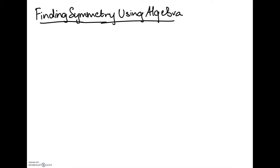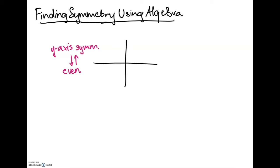If you're already familiar with those terms, we can just get started. First, I want to point out the overlap between two terms: y-axis symmetry is essentially when a graph is symmetric across the y-axis. If a graph has y-axis symmetry, that means the function is even. Let's draw a simple parabola with its vertex at the origin — this graph is symmetric across the y-axis, so the function is even.